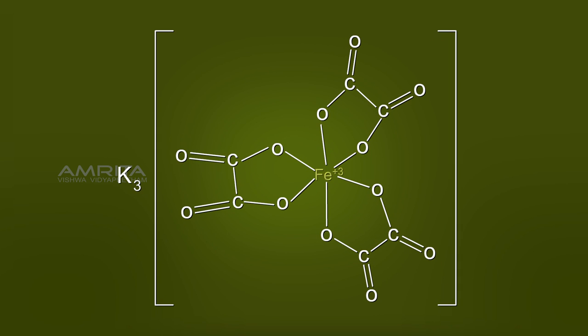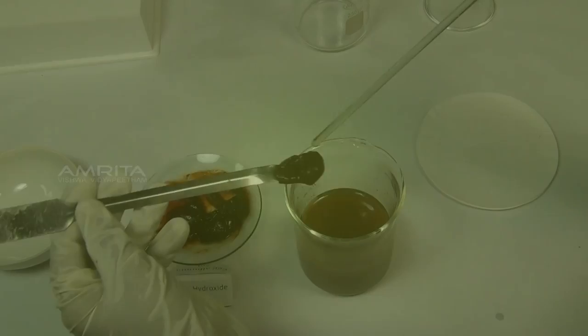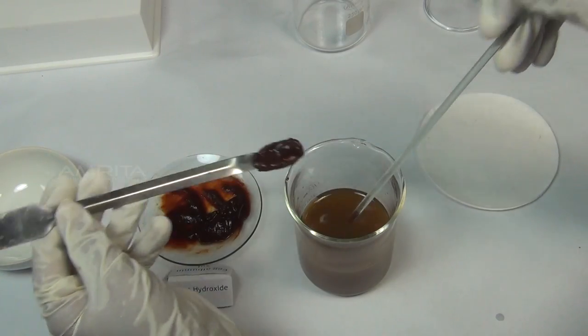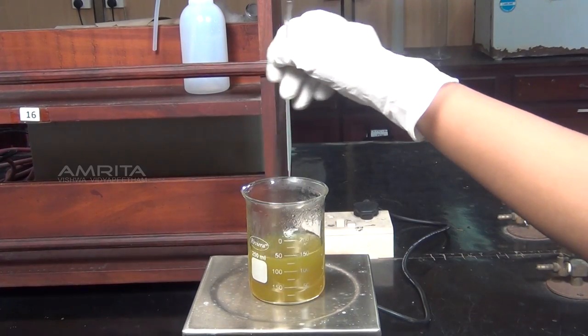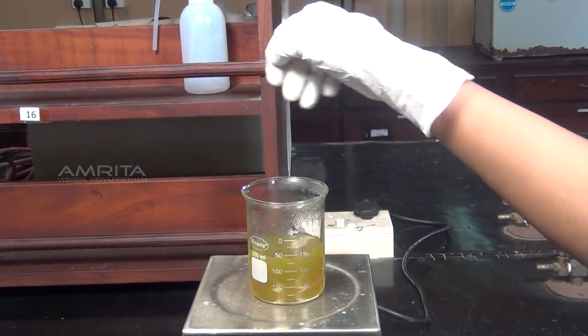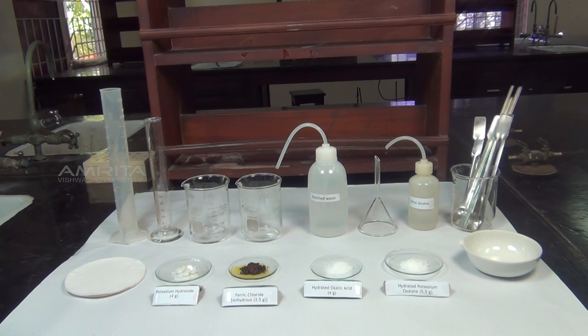The central iron atom is in the plus three oxidation state. This complex can be prepared by dissolving freshly prepared ferric hydroxide in a solution of potassium oxalate and oxalic acid. Our aim here is to prepare a pure sample of potassium trioxalatoferrate-3.